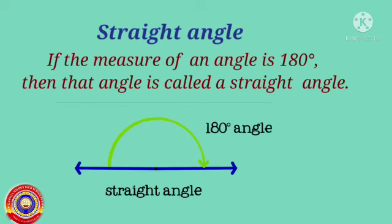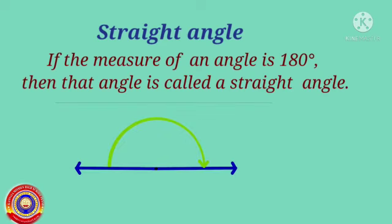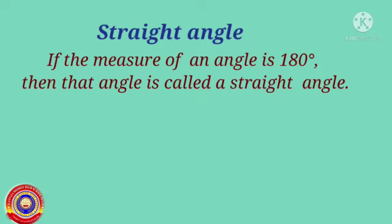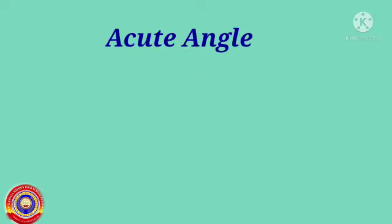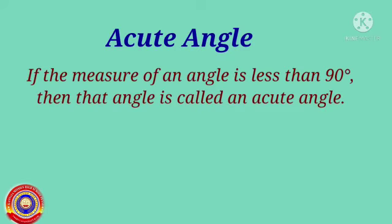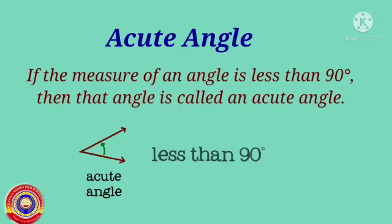Next, straight angle. If the measure of an angle is 180 degrees and is formed by a straight line, then that angle is called a straight angle.